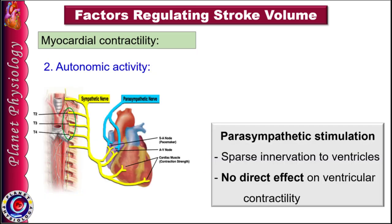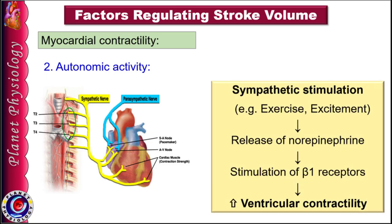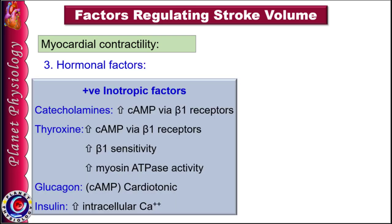Ventricles are innervated mainly by sympathetic nerves but very sparsely by parasympathetic vagal fibers. So ventricular contractility is predominantly influenced by sympathetic activity. Sympathetic stimulation, as during exercise or excitement, increases ventricular contractility by releasing norepinephrine which stimulates beta-1 receptors. Sympathetic inhibition decreases contractility.